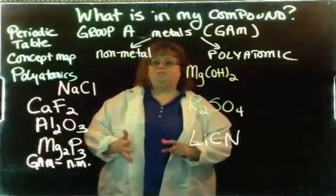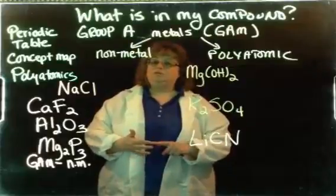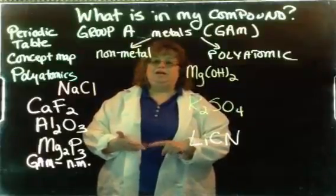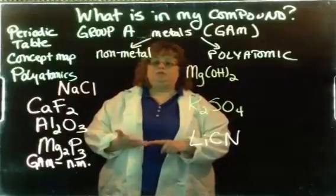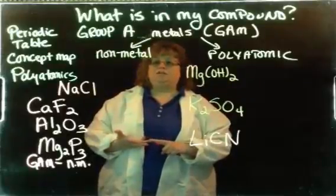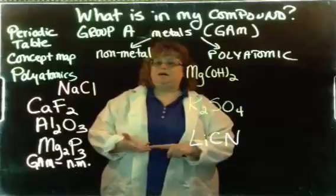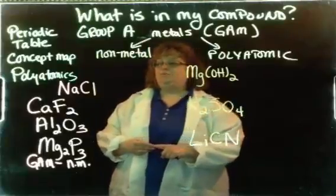We're looking at group A metal compounds. So those are metals in groups 1A and 2A, as well as aluminum. And we're looking at those either being attached to a nonmetal or to a polyatomic. So let's take a look at these examples I have on the board.